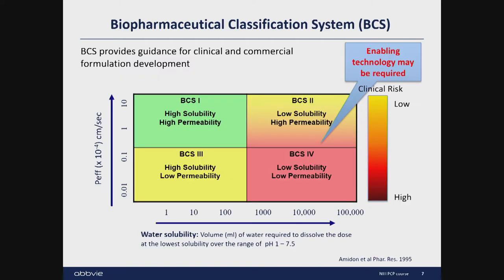These two major steps — dissolution and permeation — relate to the major attributes of drug products: solubility and permeability. This is the BCS scheme, which stands for Biopharmaceutical Classification System. BCS was proposed back in 1995 and is now very well adopted by the FDA as general guidance.